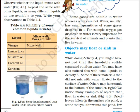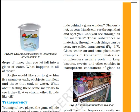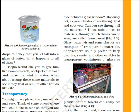We notice many examples of objects that float in water or sink: dried leaves fallen on the surface of a pond, a stone that you throw into the pond, and a few drops of honey that fall into a glass of water. Looking at the picture, we can see some things sink and some things float. Bujo would like you to give five examples each of objects that float and objects that sink in water. What about testing these same materials in other liquids like oil?